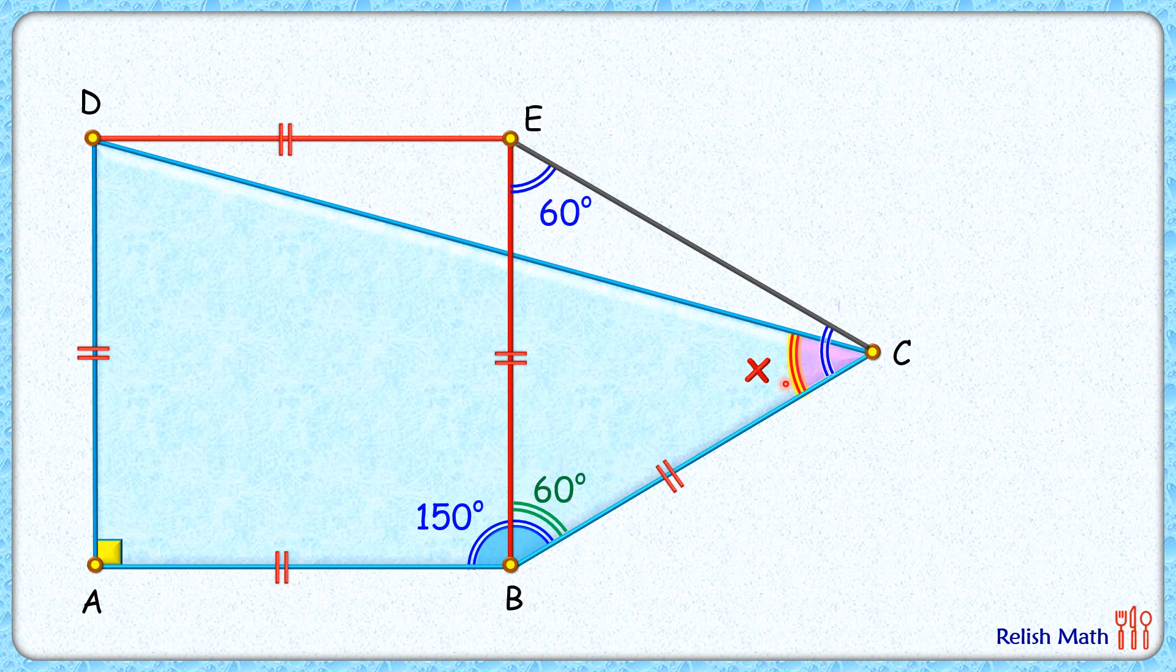So basically this triangle BCE is an equilateral triangle, and thus this side is also equal to the remaining sides.